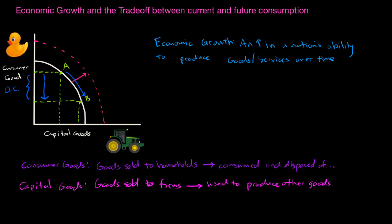What if society moved in the other direction and chose to produce more consumer goods today — going from point B to point A? In that case, the opportunity cost would be the capital goods that it could have enjoyed by producing at point B. The PPC once again illustrates this very basic concept of opportunity cost — it shows us what is given up in order to have anything.